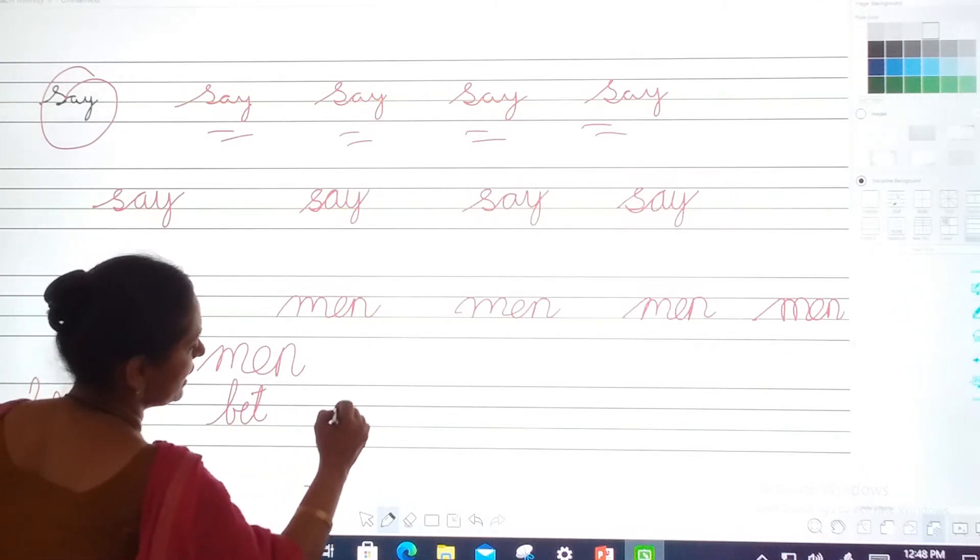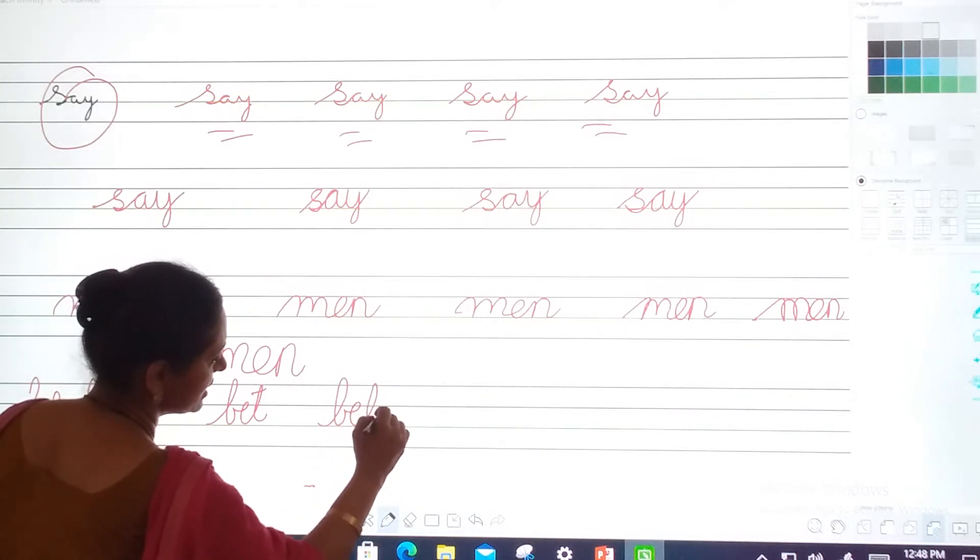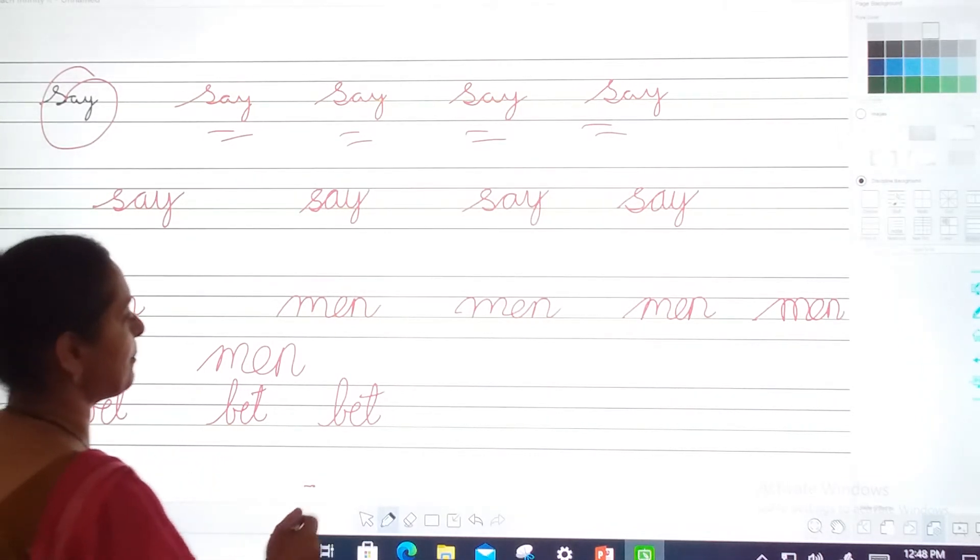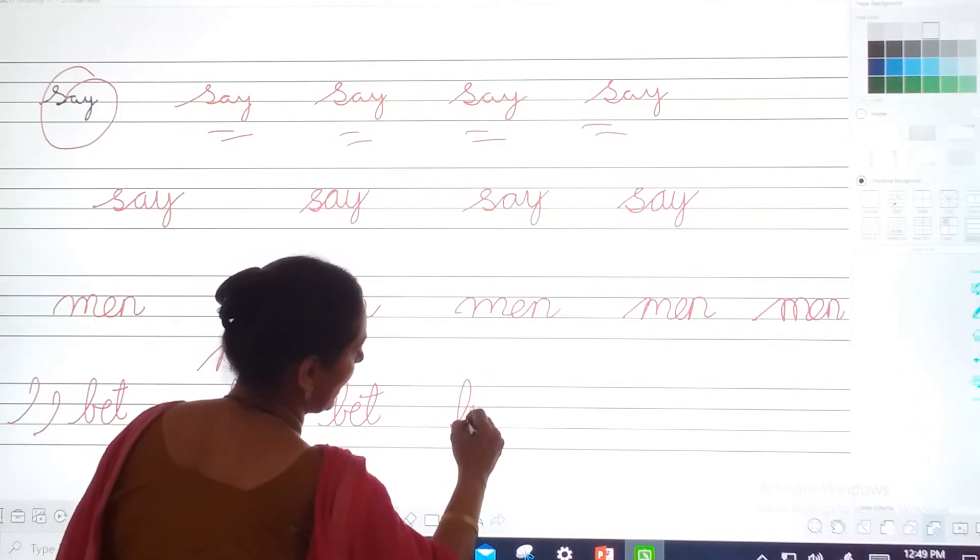Once again. B, E, and T. It's called bet. Okay? Another one is lip. L, I, P, in this way.